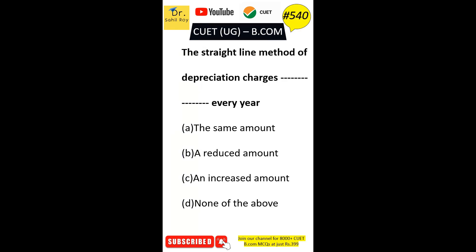The straight line method of depreciation charges dash every year. Option A: the same amount. Option B: a reduced amount. Option C: an increased amount. Option D: none of the above. The correct answer is Option A — the straight line method of depreciation charges the same amount every year.